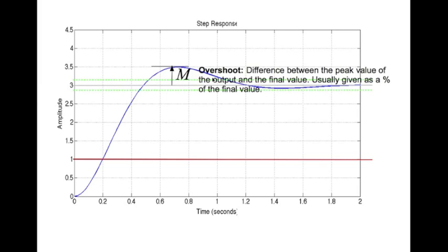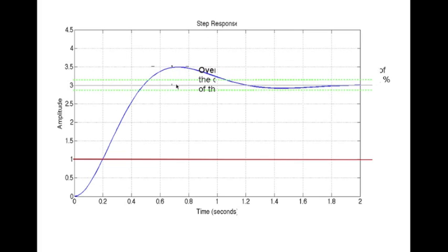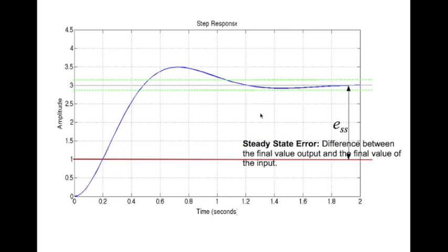Overshoot is the maximum value over the final value given by m. Typically it's given as a percentage of the final value and it's called percentage overshoot. And of course the steady state error is the difference between the output and the input at t equal to infinity.